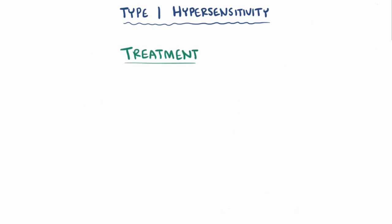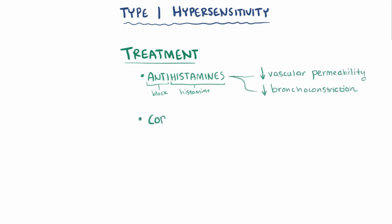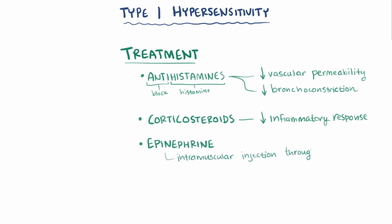Treatment for Type 1 hypersensitivity can involve a variety of medications. Antihistamines act to block the effects of histamine, which reduces vascular permeability and bronchoconstriction. Also there are corticosteroids, which can be used to reduce the inflammatory response, as well as epinephrine, which is sometimes given during severe reactions via intramuscular injections through an EpiPen or intravenous injection. Epinephrine can help constrict blood vessels and prevent anaphylactic shock.